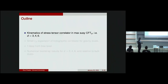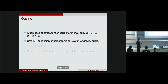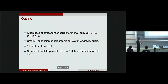The outline is that I will first introduce some kinematics about the stress tensor correlator in maximally supersymmetric CFTs, restricting to D equals 3, 4, and 6. I will then discuss how this is related to the small Planck-length expansion of the holographic correlator, discuss how to get one loop from tree level, and finally show these numerical bootstrap bounds and discuss the final results.